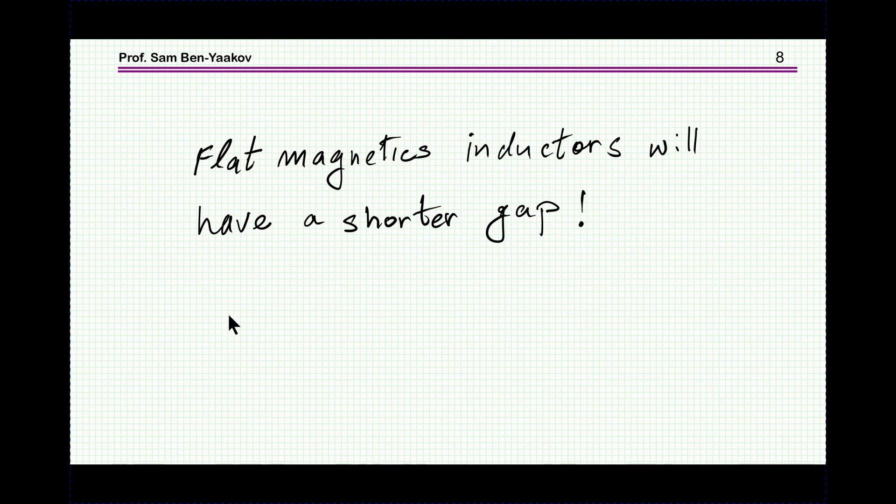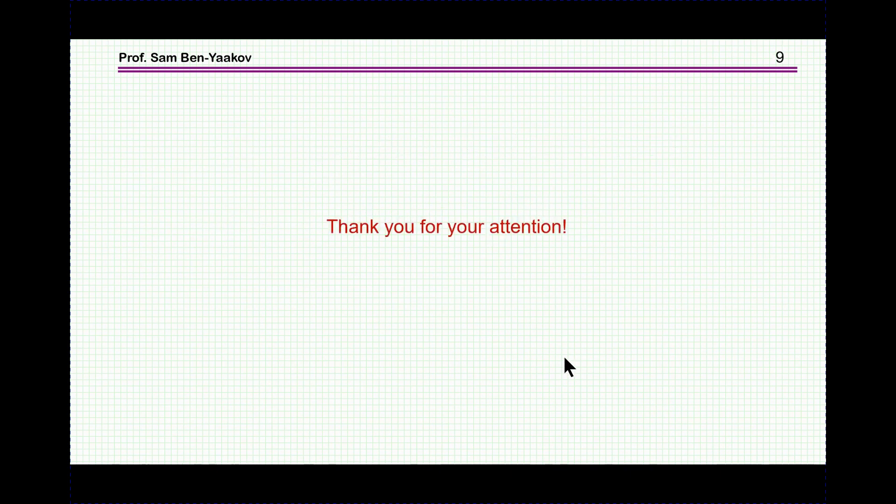This would imply that flat magnetics, which are characterized by a large cross-section area, will have a shorter gap, which is nice because the emission of EMI will be smaller. So this is one advantage of a flat magnetics core.